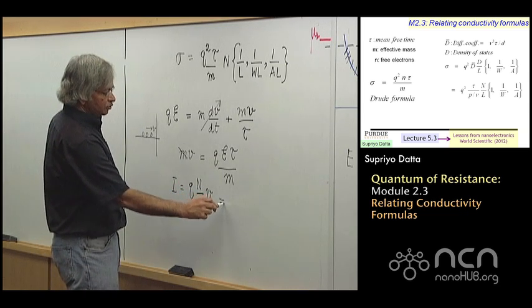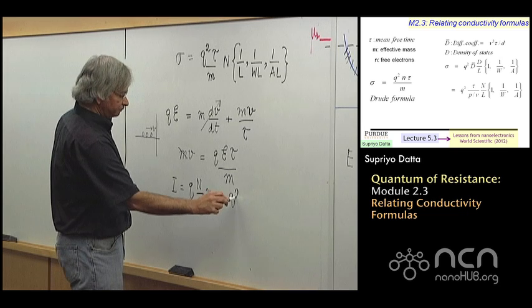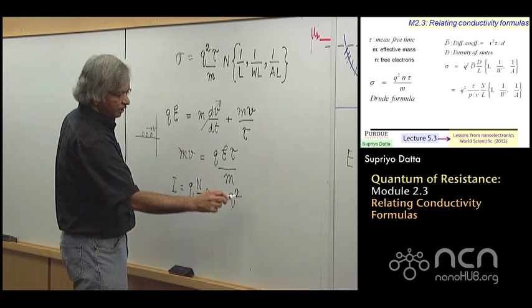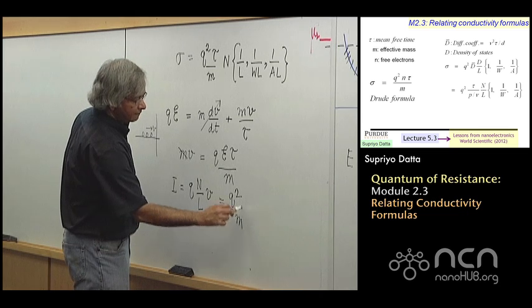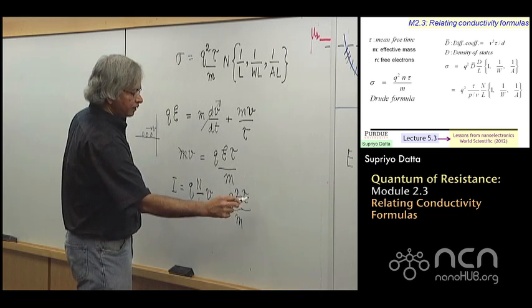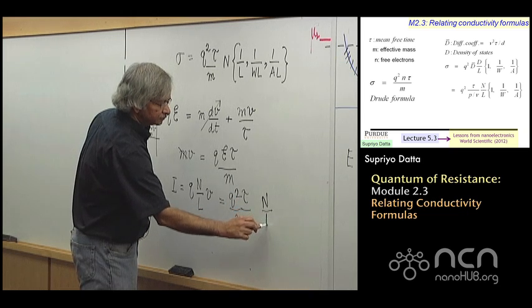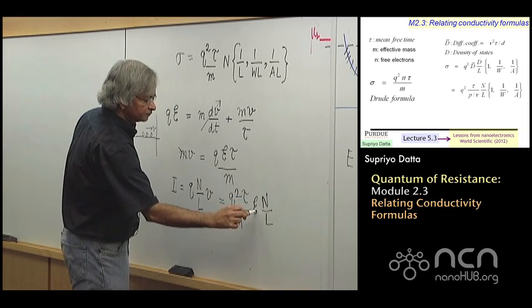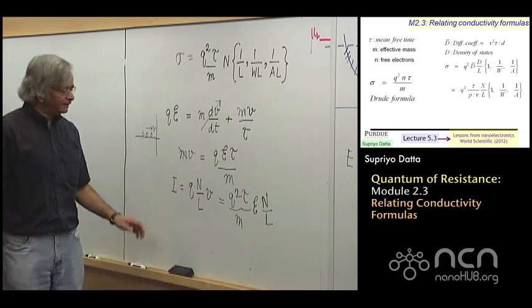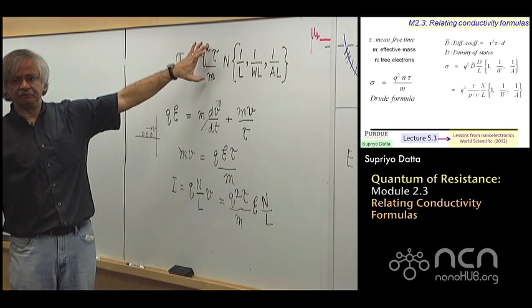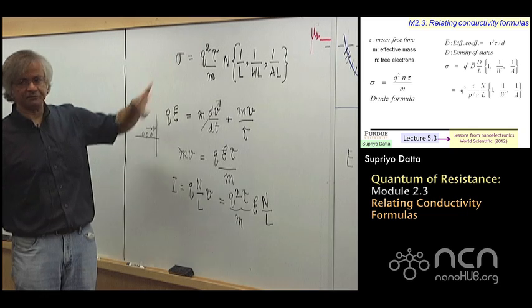And now if I multiply by the charge on an electron, I'll get the current. So this then leads to Q square, QNL, N over L times V. So it's Q square over M tau and this N times V, etc. And this is then what leads to this expression for conductivity that I mentioned before. This is what you'll see in freshman physics text.